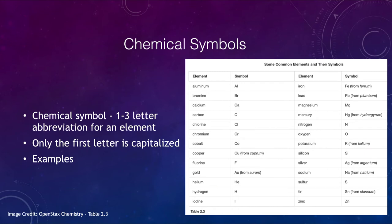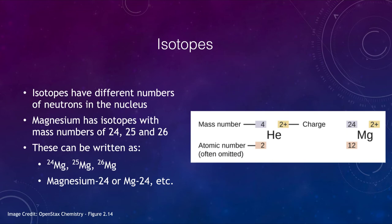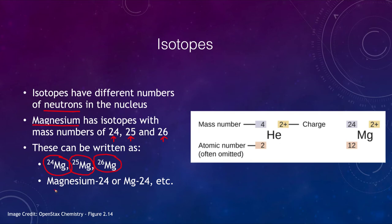Now we can look at the concept of isotopes. Isotopes are atoms that have different numbers of neutrons in the nucleus. For example, magnesium has isotopes with mass numbers of 24, 25, and 26. We can write these with a superscript before the element symbol — so ²⁴Mg, ²⁵Mg, or ²⁶Mg — or with the element name followed by the number, such as magnesium-24, magnesium-25, or magnesium-26, abbreviated as Mg-24, Mg-25, or Mg-26 depending on which isotope we are considering.